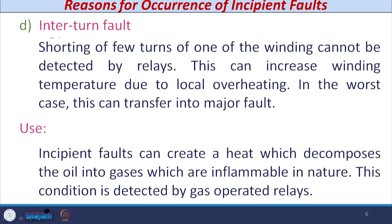The fourth reason for incipient faults is interturn faults. Whenever a few turns of one phase or multiple phases are shorted together, there are fair chances of temperature increase due to local heating. In the worst case, this may transfer into a major fault. Keep in mind that interturn faults occur in a particular phase or multiple phases. The differential protection normally used is not capable of detecting such interturn or turn-to-turn faults, so we need to detect this with a separate device or arrangement.